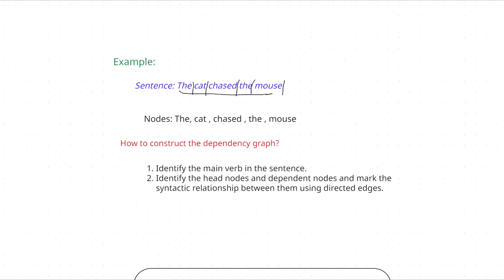So how do you actually construct the dependency graph? The first step is to identify the main verb. Whenever a sentence is given you have to identify the verb. To get clarity I will tag it with parts of speech. 'The' is a determinant, 'cat' is a noun, 'chased' is a verb, 'the' is a determinant, and 'mouse' is a noun. The main verb in this sentence is 'chased', and in dependency graph this verb is taken as the root node.